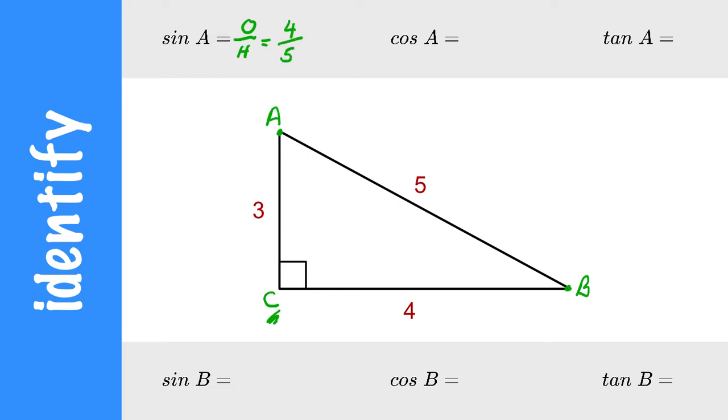Cosine is adjacent compared to the hypotenuse, which will be 3 over 5.